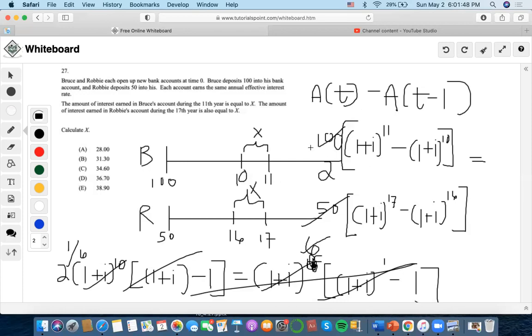Now let's calculate x. We know that either equation equals x, so let's plug i into one of them. Since i equals 0.122462, we plug it into Bruce's equation. So (1+0.122462)^11 equals 3.565, minus (1.122462)^10, times 100. We get 38.87 as the final answer, which is closest to choice E.